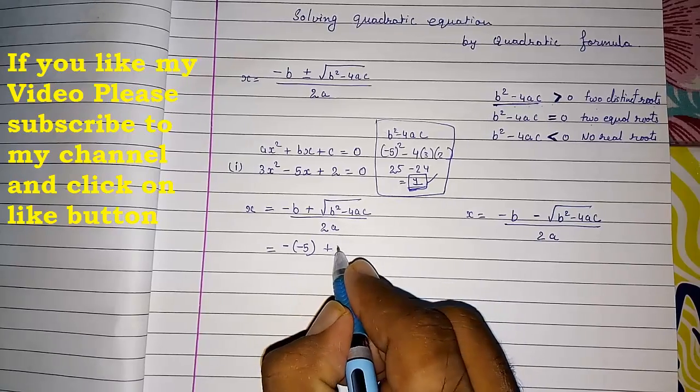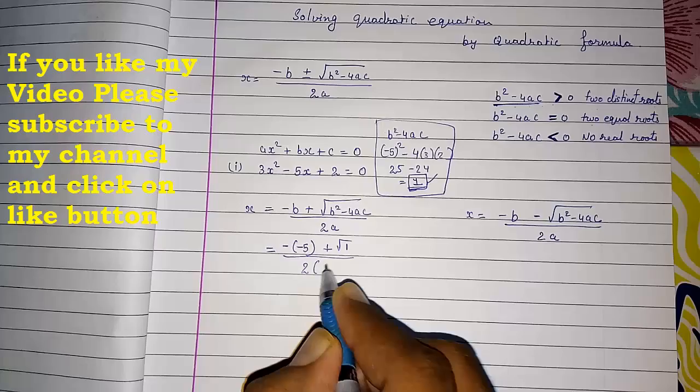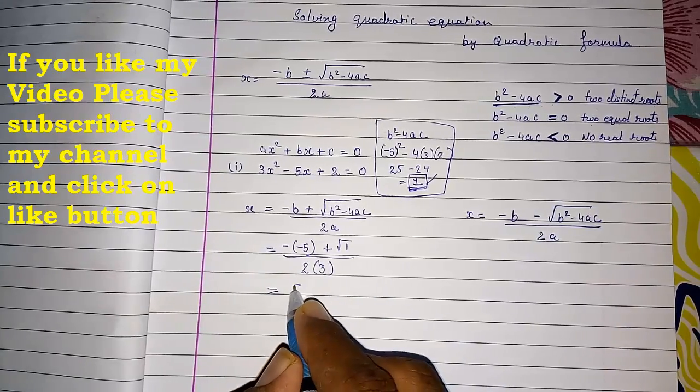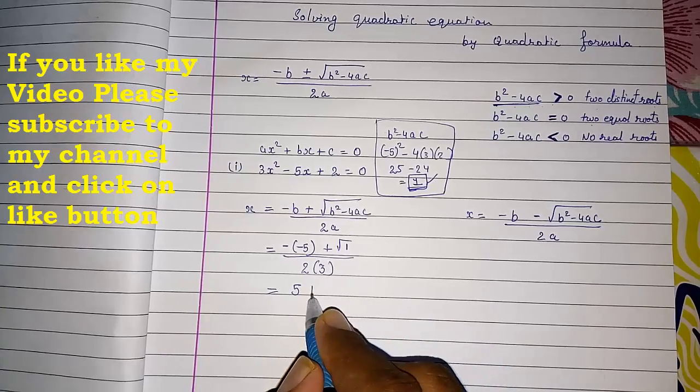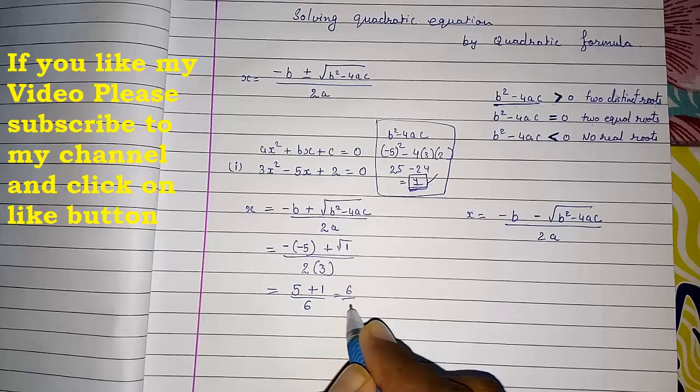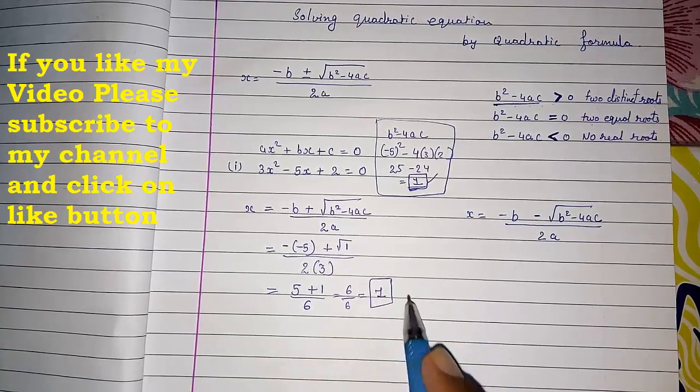Plus discriminant we found, under root 1, upon 2 into 3. So it will be 5 plus 1, and root of 1 will be 1. 2 into 3 is 6. So 6 by 6, your first root or zero is 1.